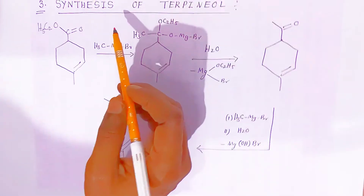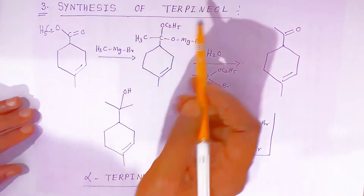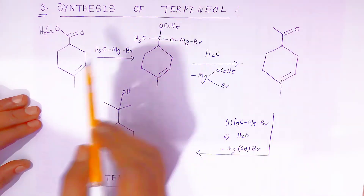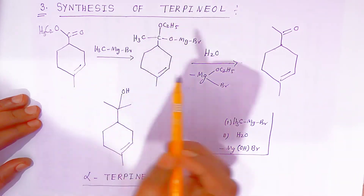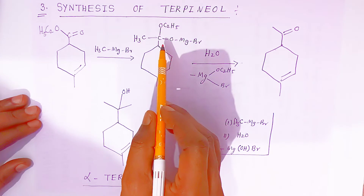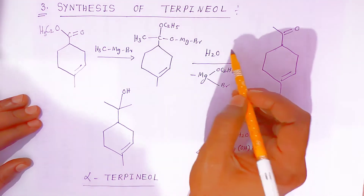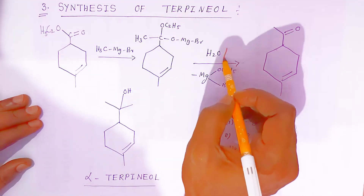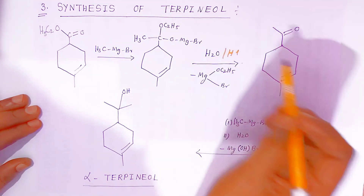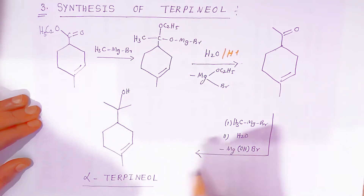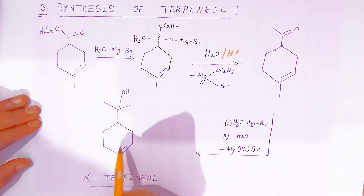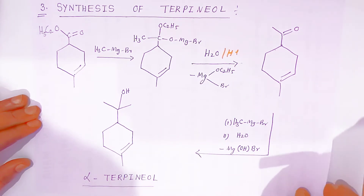We can also synthesize terpene oil. The reactant in presence of methyl magnesium bromide gives an addition product. On acidic hydrolysis, a compound is formed, and again reacting with methyl magnesium bromide followed by acidic hydrolysis gives alpha terpene oil. This is the structure of alpha terpene oil.